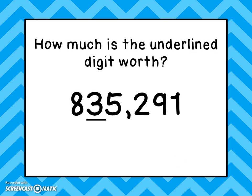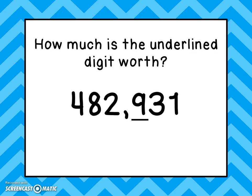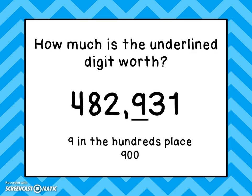How much is the underlined digit worth? The first thing we have to figure out is what place is underlined. The three is in the ten thousands place, so the three is worth thirty thousand. How much is this underlined digit worth? You can see that it's a nine in the hundreds place — nine groups of one hundred, or nine hundred.